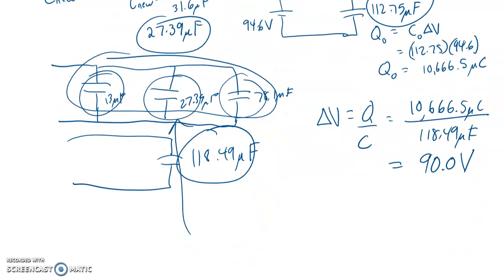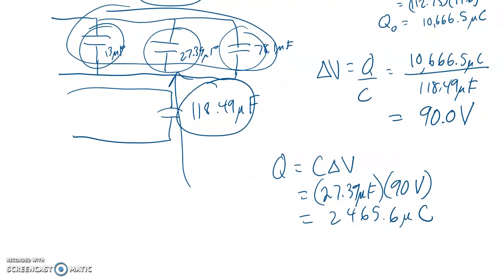Well, we're focused in on the middle one. So let's see if we can find the charge now because Q equals C delta V. So this equivalent capacitance here is 27.39 microfarads. That's the new equivalent capacitance. And the new voltage is 90 volts. And so that gives us a charge. All right. Got to multiply by 27.39. That gives us a charge of 2,465.6 microcoulombs.